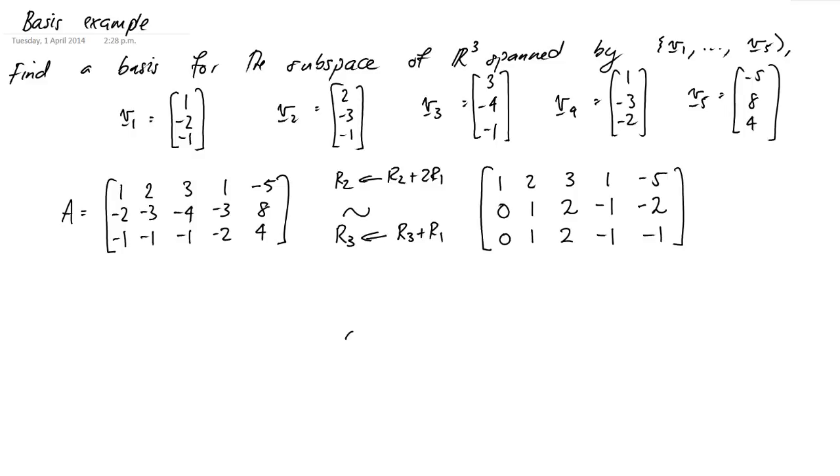We just need one more row operation. We need to clear away underneath our pivot in the second row. So the row operation will be row 3 becomes row 3 minus row 2. So we're now using this pivot to clear away this value down here. The top row will remain the same as will the next one: 0, 1, 2, negative 1, negative 2. And then we're just subtracting off the row, so we'll get 0, 0, 0, 0, 1. And we've hit row echelon form.